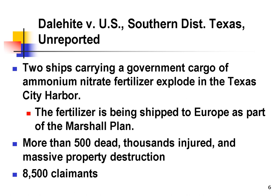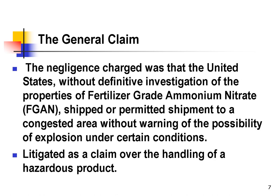A large number of cars were destroyed that were parked around the port. Many residential houses were destroyed. Most of the downtown was destroyed. This particular litigation included about 8,500 claimants. The general claim in the lawsuit was that the United States was negligent in the way it shipped or permitted shipment in a congested area of this fertilizer grade ammonium nitrate. There were also allegations that it had not been properly packaged.